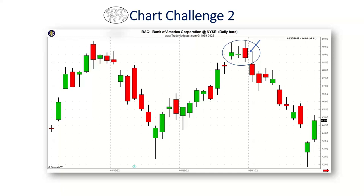Moving to the next chart challenge. At the circled area, what are some reasons for caution? In other words, if you are long — and when we talk about cautionary or bearish signals, it doesn't necessarily mean you should short; if you're trading options you can think about a bear trade or a put, but most people won't be shorting stocks. When we have negative candle signals, it can be a great time to think about exiting or lightening up on your long position. So, what are the reasons for caution in this circled area?